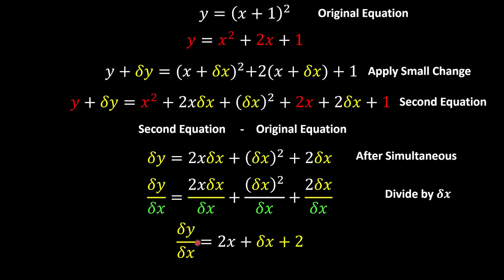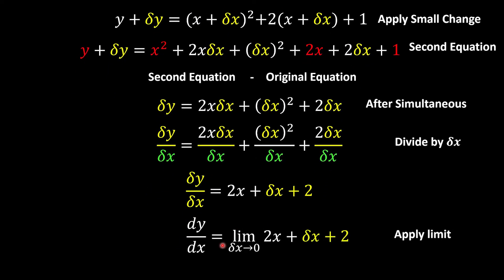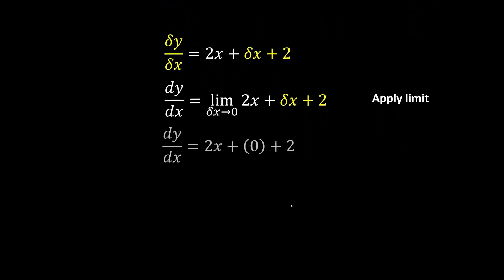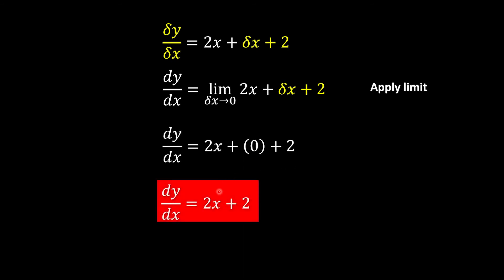Since delta x is not good enough, we let delta x approach 0, giving us 2x plus delta x plus 2 with delta x now equal to 0. So dy over dx is equivalent to 2x plus 2, and this is the gradient function.